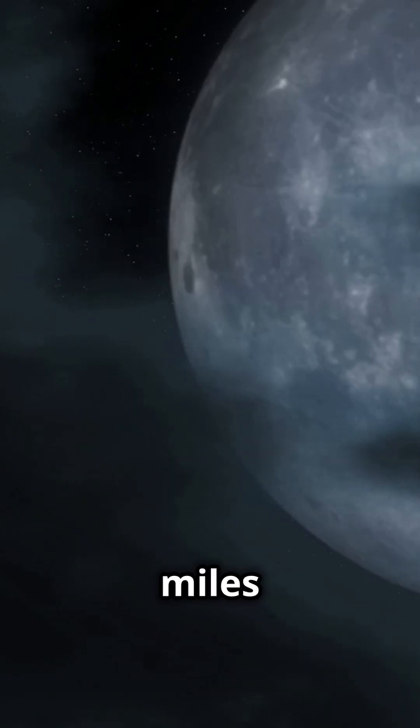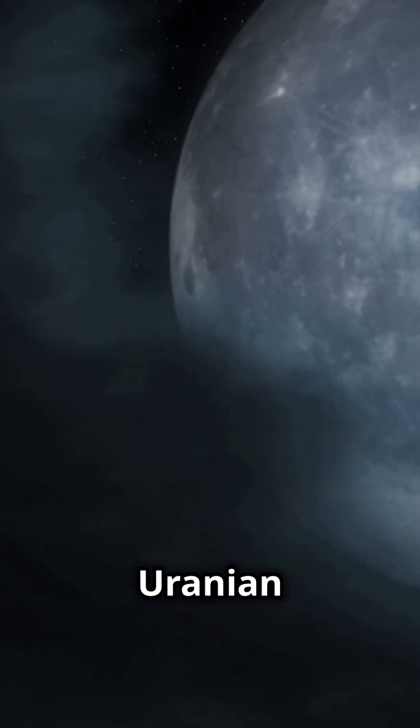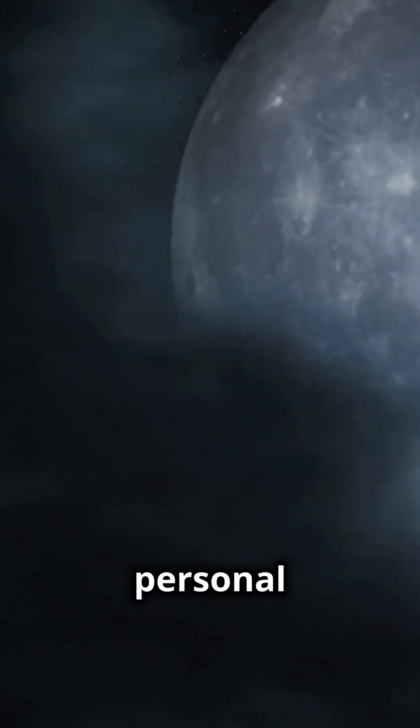This moon is around a thousand miles in diameter and sports a neutral gray color, just like its Uranian siblings. Voyager 2's visit was the only time we got up close and personal with Titania.